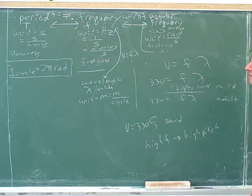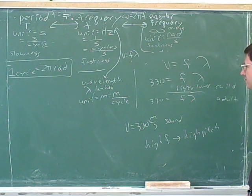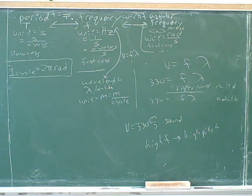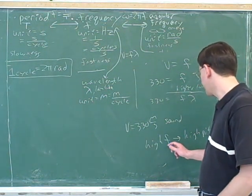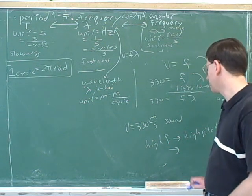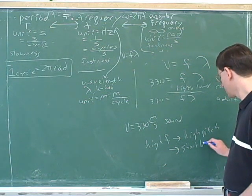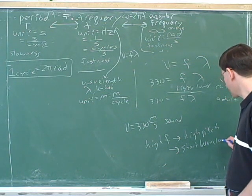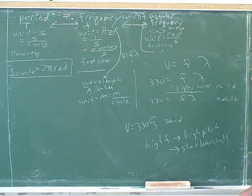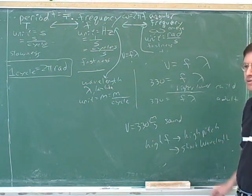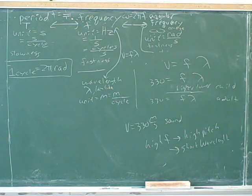So if you have a high frequency, what does that tell you about the wavelength? It's short. Or small. Yeah. So notice that short wavelength means high pitch. So wavelength is inversely related to pitch, and frequency is directly related to pitch. So children have high frequencies and low wavelengths for the sounds that they generate.